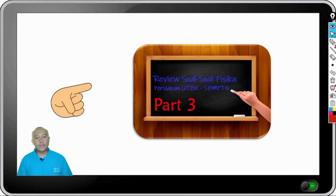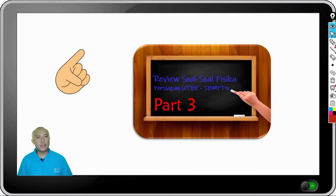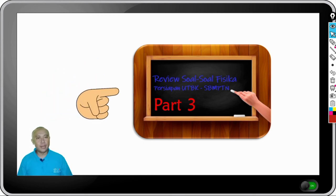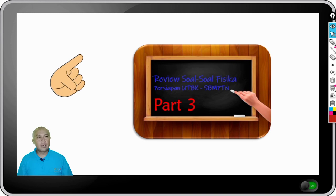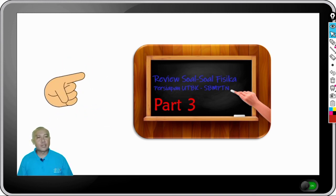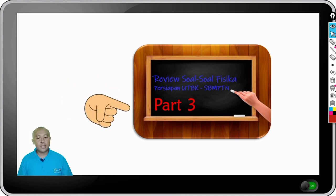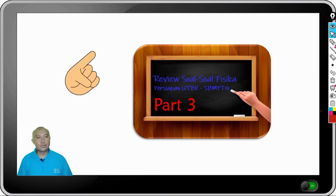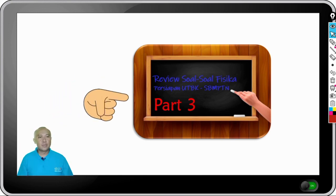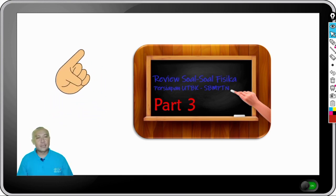Perbandingan (Q/t)_A : (Q/t)_B = (AA/LA) : (AB/LB) = (AA × LB) / (AB × LA) = (2/1) × (3/4) = 6/4 = 3/2. Jawaban soal ini adalah B. Demikian pembahasan review soal fisika persiapan UTBK SBMPTN 2021 Part 2. Insyaallah kita akan kembali tayang untuk membahas soal fisika persiapan UTBK 2021 untuk Part 3. Terima kasih, semoga sukses.